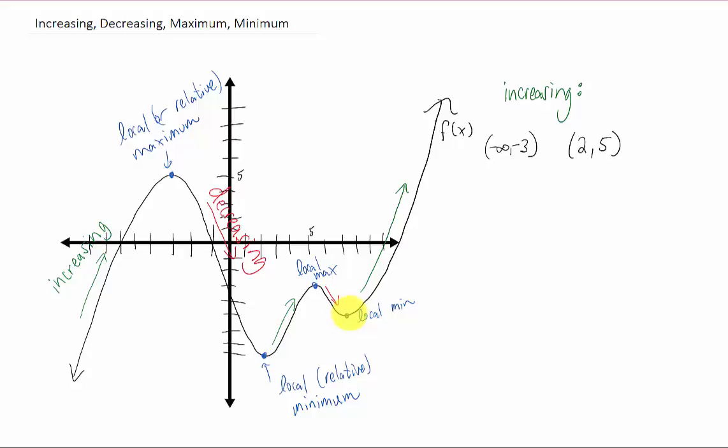And we have one more interval where our function is increasing. It looks like from all of our x values, from seven all the way up to infinity, our function is increasing. So these are the three intervals on which our function is increasing. We combine them using unions, and that is how we describe where our function is increasing.